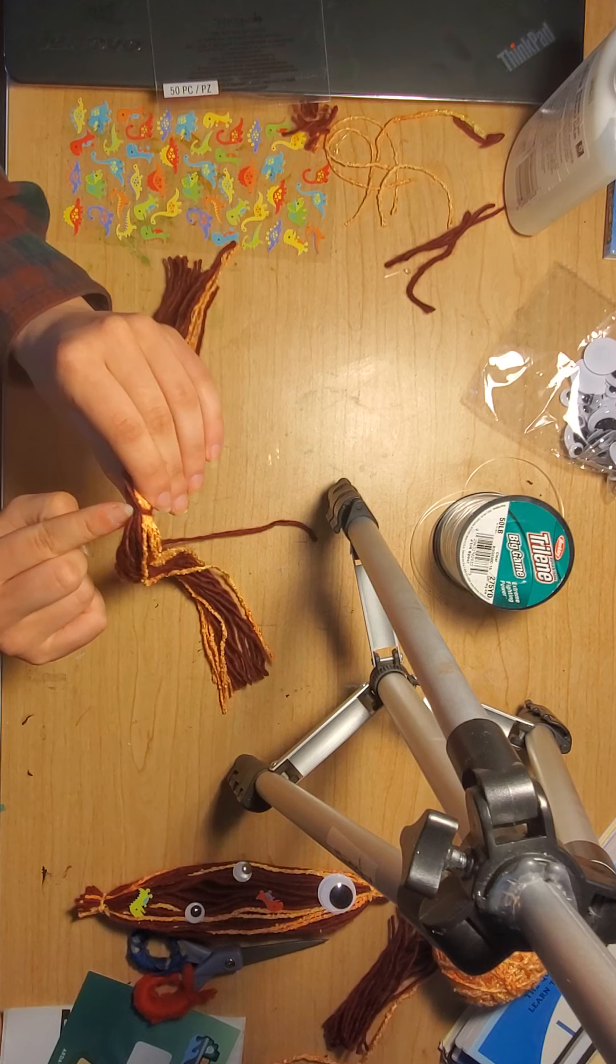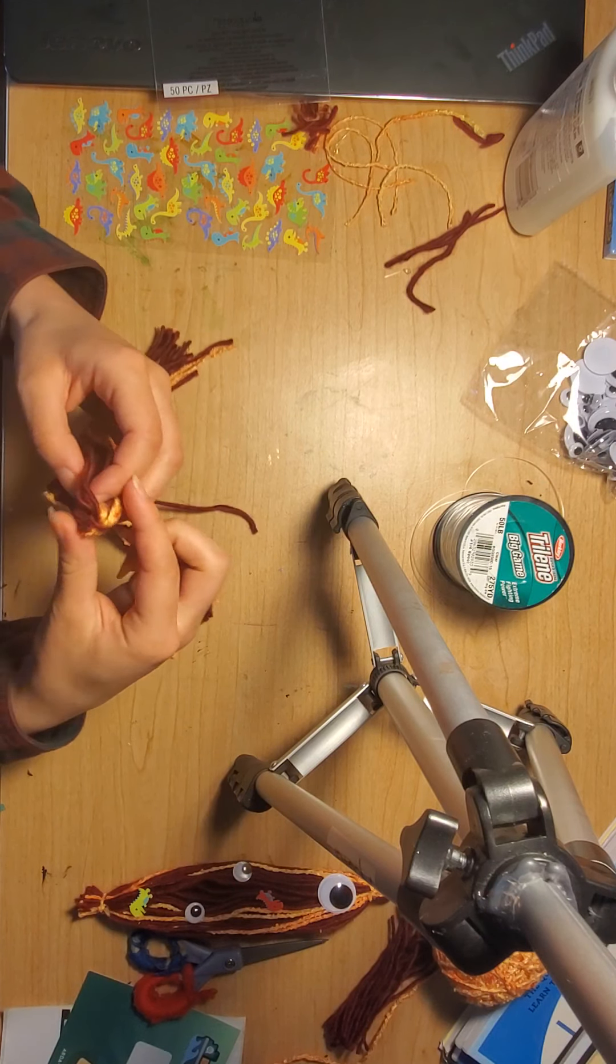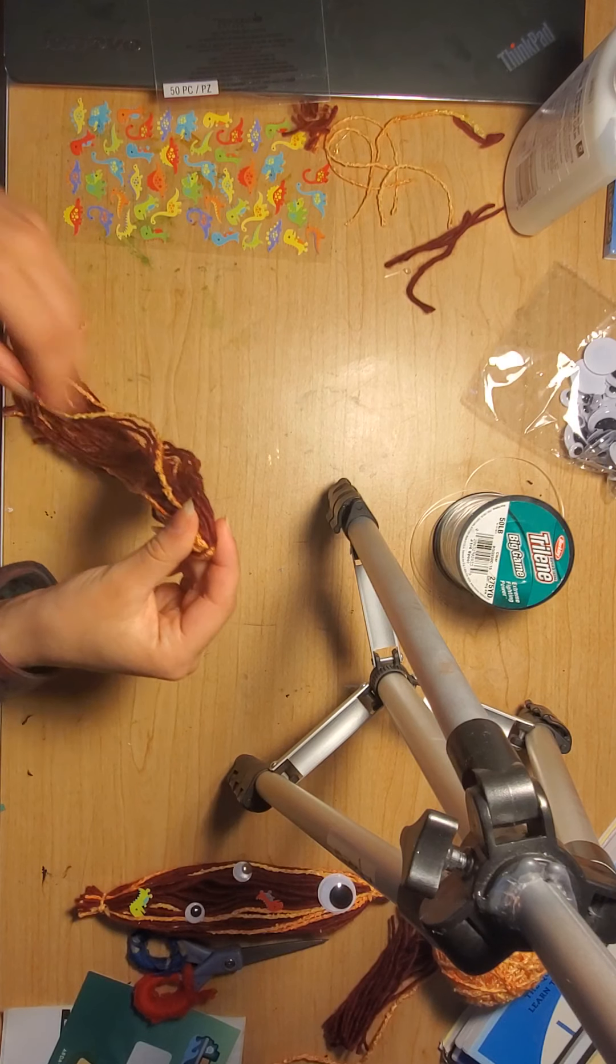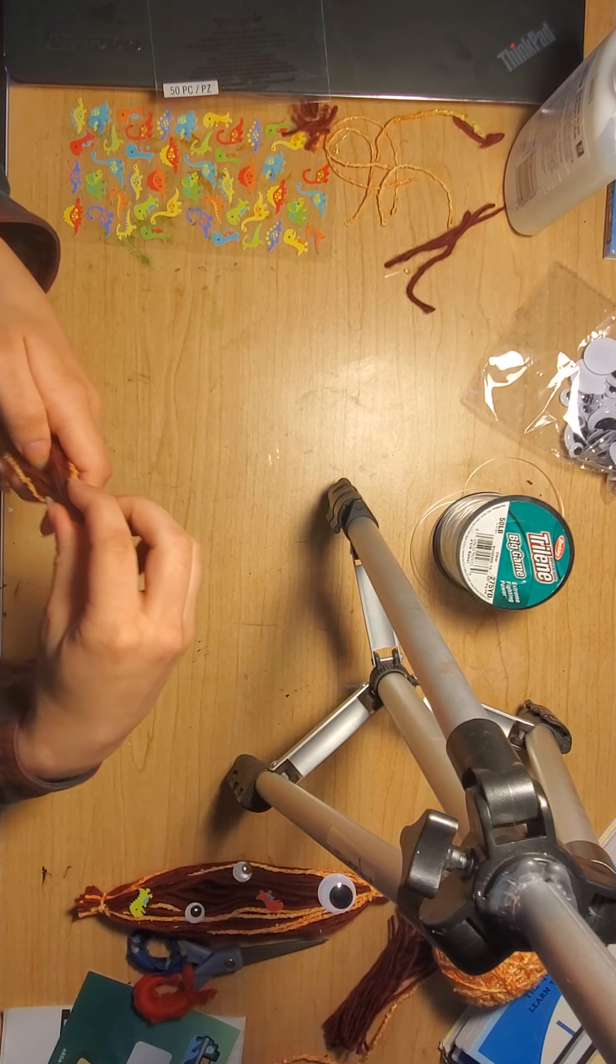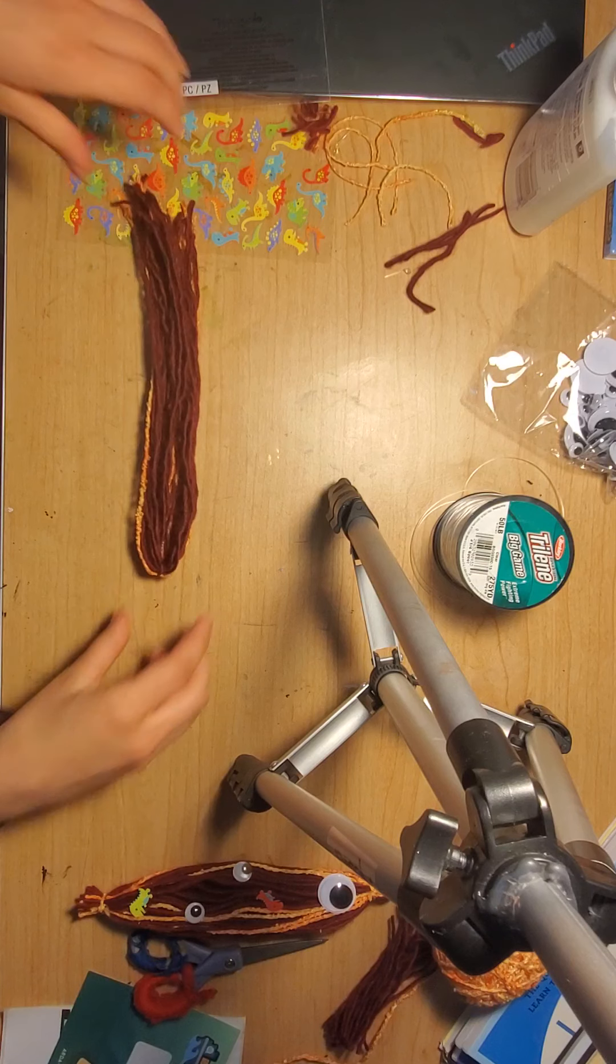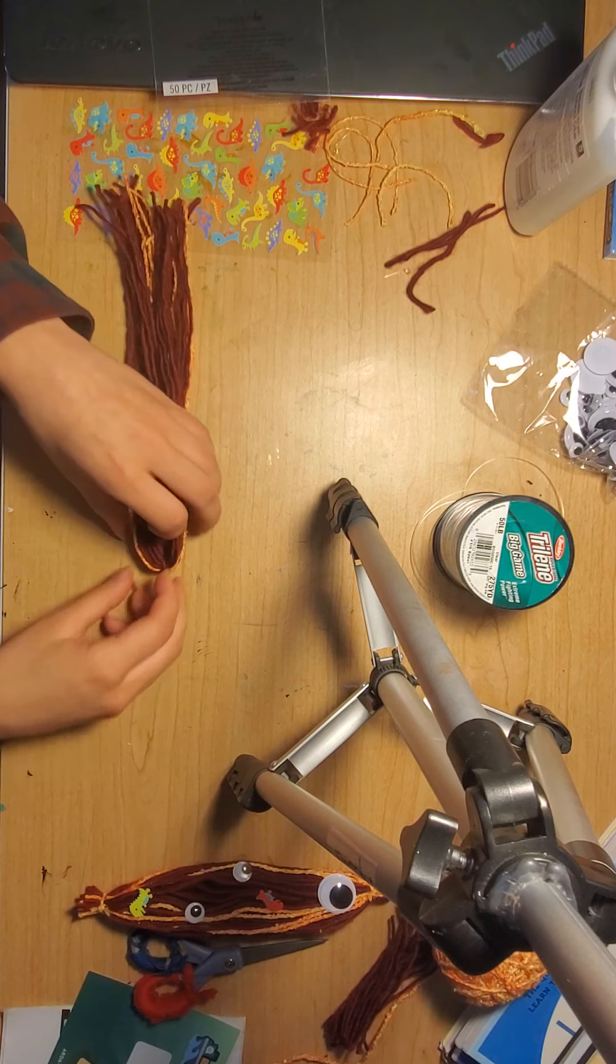And then what you're going to do is you're going to take the middle where you've tied your thing. You're going to fold it in half and I'm going to brush out my strands. You're going to fold it in half and there you've got the beginning of your fish body slash worm body whatever body.